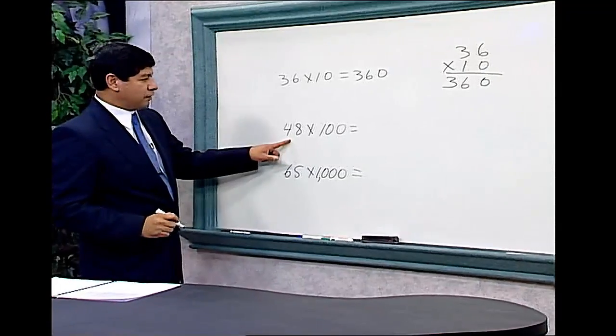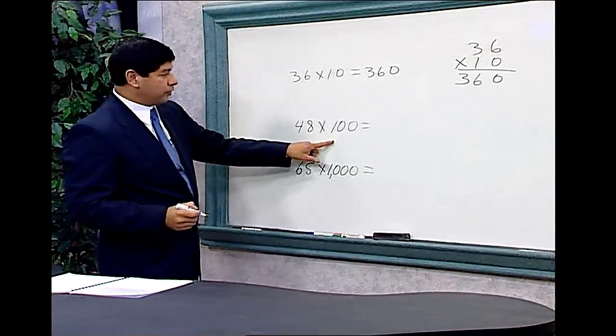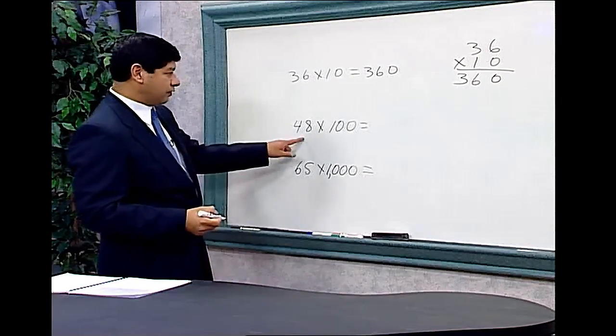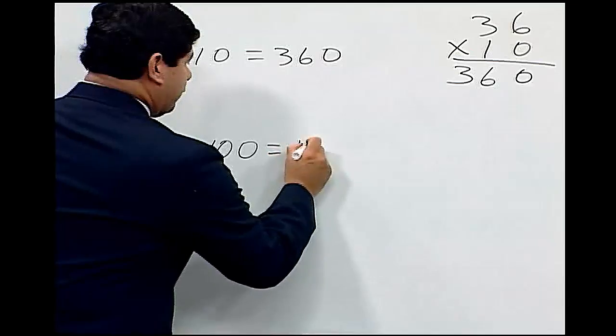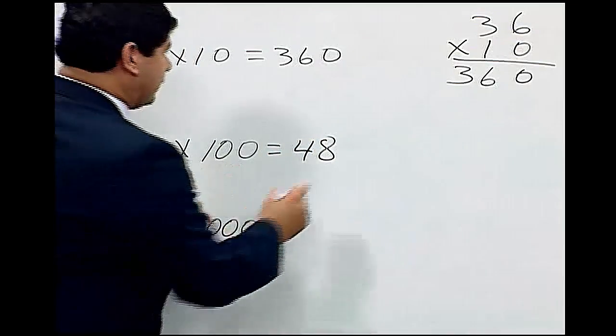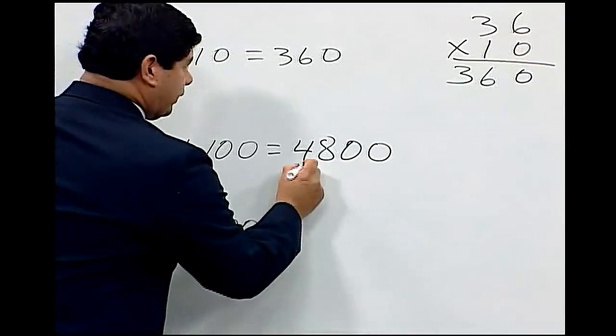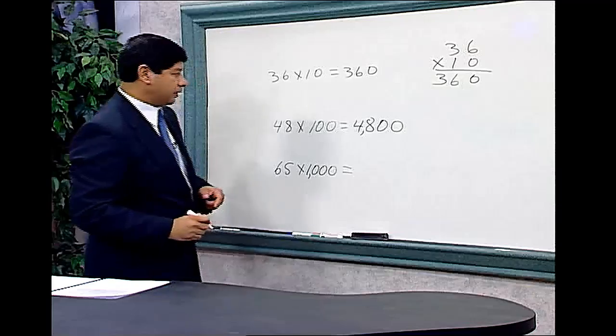Again, to multiply 48 by a number, in this case 100, just add two 0s to the right of the number. So we have 48, and let us add our two 0s. So we have 4,800. Let us not forget our comma.